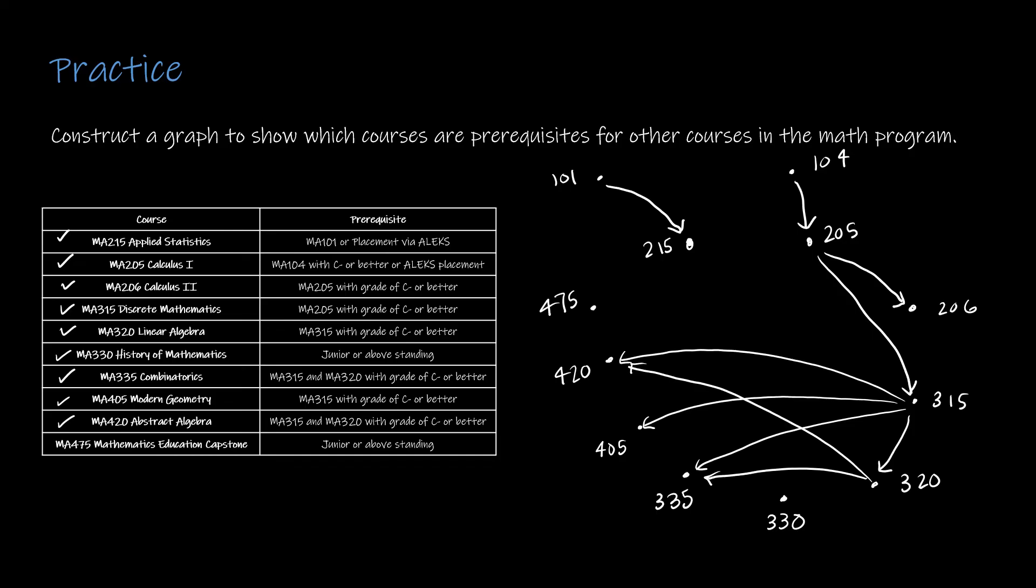475 requires junior or above standing. I've got a couple of isolated vertices. If it drove you crazy because there is technically a prerequisite, you could say junior and then you would need that for both of those isolated vertices.